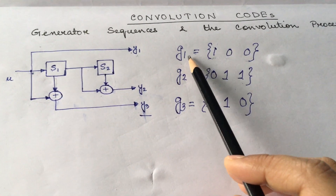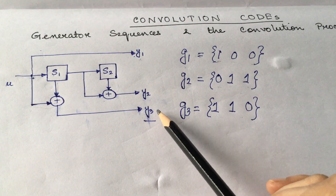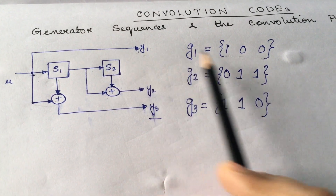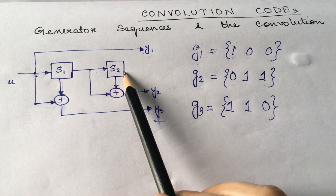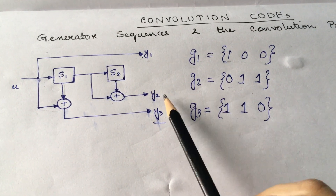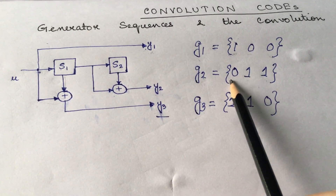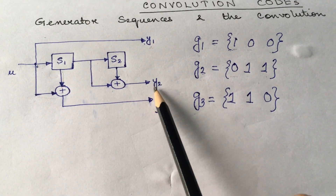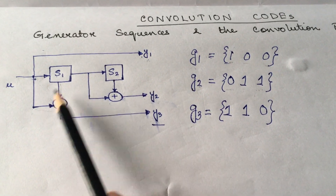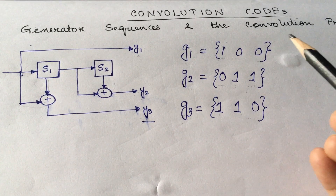How do we find out the generator sequences? G1, G2, and G3 are the generator sequences corresponding to each output bit Y1, Y2, and Y3 respectively. Y1 is directly connected to U or the message bit stream, so we write 1. It has no connection to S1 or S2, so we write zeros for S1 and S2. For G2, there is no connection from U to Y2, so we write 0. S1 and S2 both contribute to Y2, so we write 1 and 1. For G3, U and S1 contribute, so we write 1 and 1. There is no connection from S2 to Y3, so we write 0. This is how we form the generator sequences.